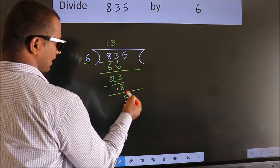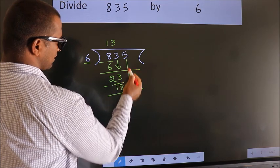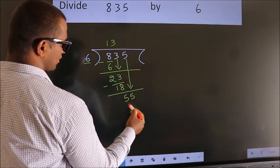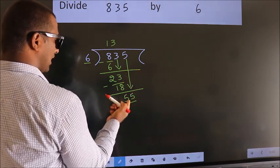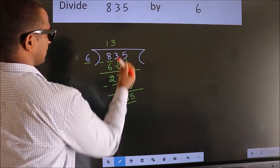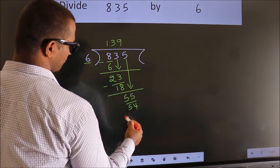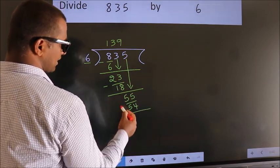After this, bring down the beside number. So, 5 down, making 55. A number close to 55 in the 6 table is 6×9=54. Now, we subtract. We get 1.